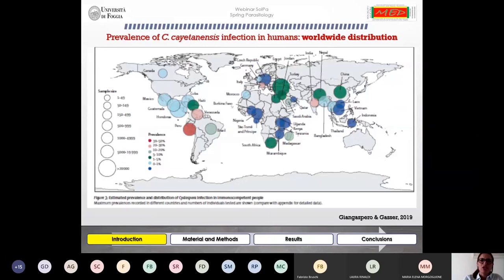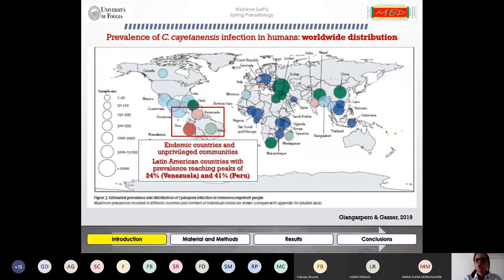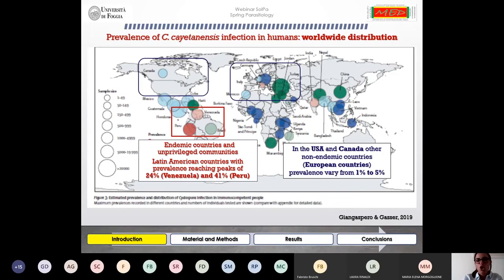The prevalence of Cyclospora cayetanensis infection in humans also depends on the countries. In developing countries which are endemic for Cyclospora, like Latin American countries, prevalence can reach peaks of 24 percent like Venezuela or 41 percent like Peru. In developed and non-endemic countries such as the USA, Canada, and European countries, the prevalence varies between one and five percent.